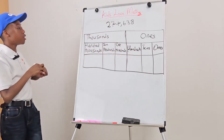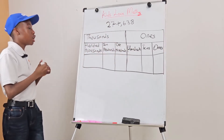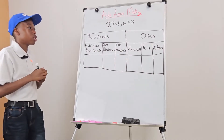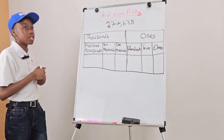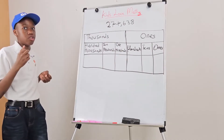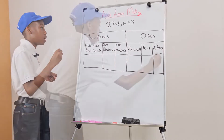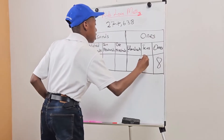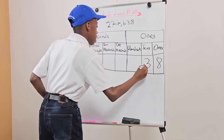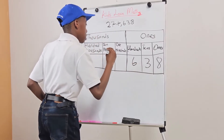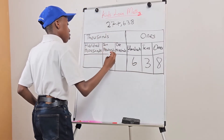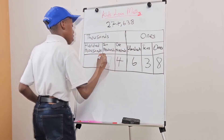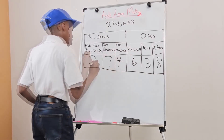Now, let's put the 274,638 into the place value chart. Eight, three, six — then we go to the thousands: four, seven, two.